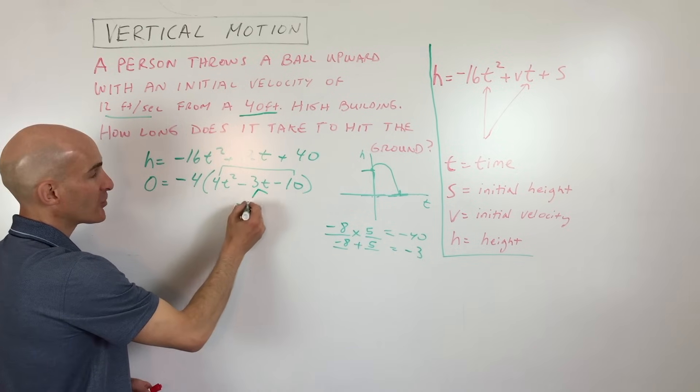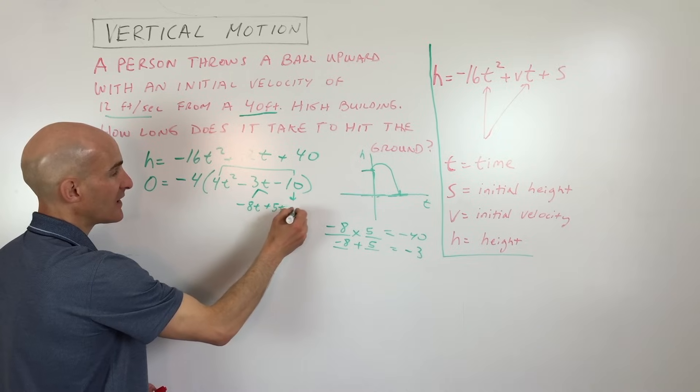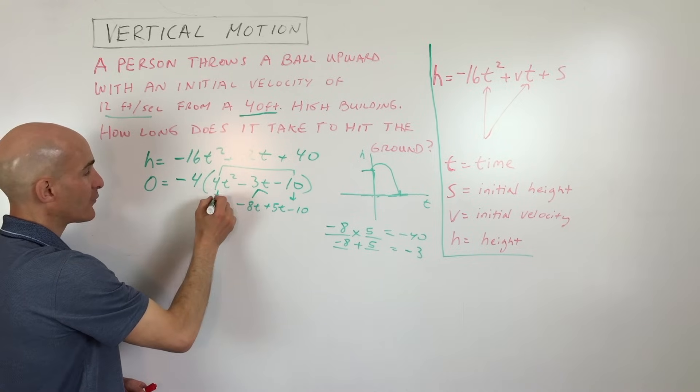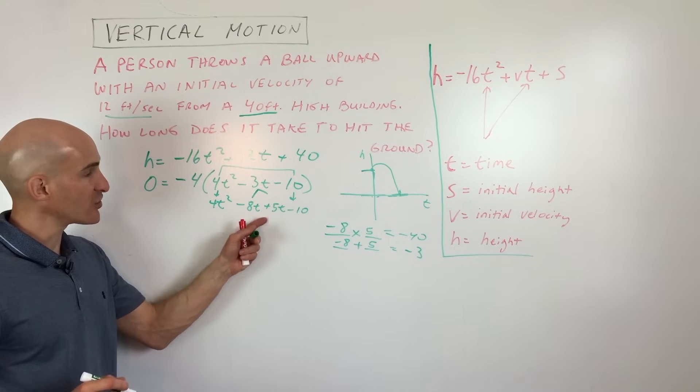So what we're going to do is we're going to split the middle term into negative 8t, positive 5t. We're going to bring down the negative 10. And we're going to bring down the 4t squared. So we just split the middle term.